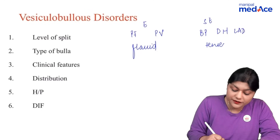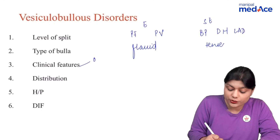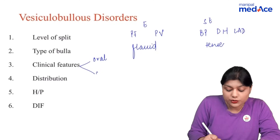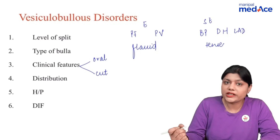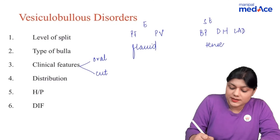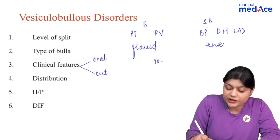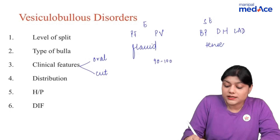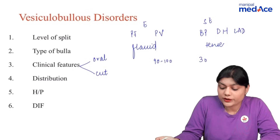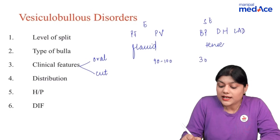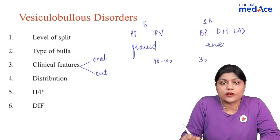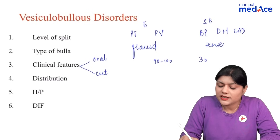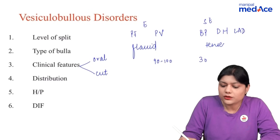Clinical features can be further divided into oral or mucosal and cutaneous features. Oral involvement is present in 90-100% of cases of pemphigus vulgaris, 30% of cases of bullous pemphigoid, absent in dermatitis herpetiformis and pemphigus foliaceus, and in linear IgA disease there can be oral involvement.